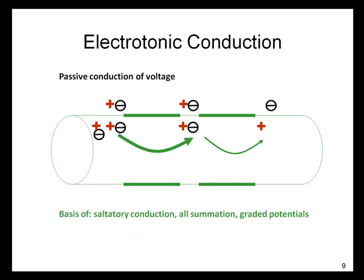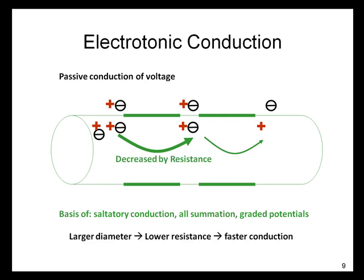The net current moving in this way is the basis of saltatory conduction, summation, and of graded potentials. Keep in mind that each of these current jumps is decreased by a resistance, because voltage becomes smaller as the electric field encounters finite resistance. In a neuron, large diameter leads to lower resistance, which leads to faster conduction.